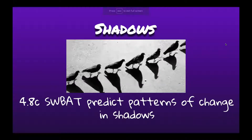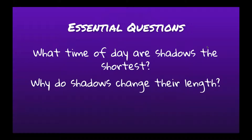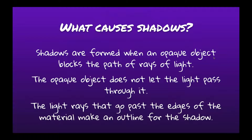Hey everybody, it's Ms. Ram. At the end of my part of the field trip, you'll be able to predict patterns of change in shadows. Our essential questions are: what time of day are shadows the shortest, and why do shadows change their length? Shadows are formed when an opaque object blocks the path of rays of light. Opaque means solid — you can't see through it — so light can't get through it either. The light rays that go past the edges of the object make an outline for the shadow, and whatever object you have creates the shape of the shadow.